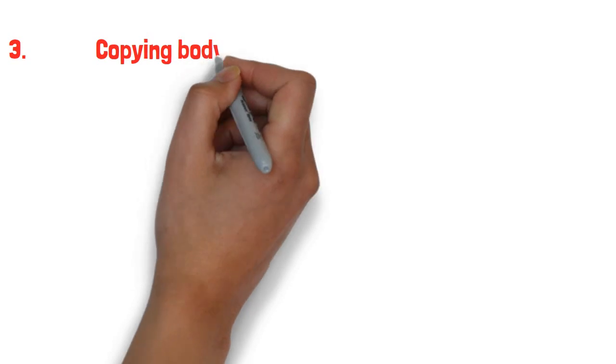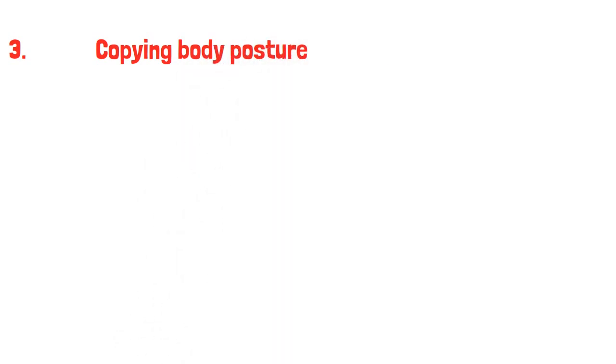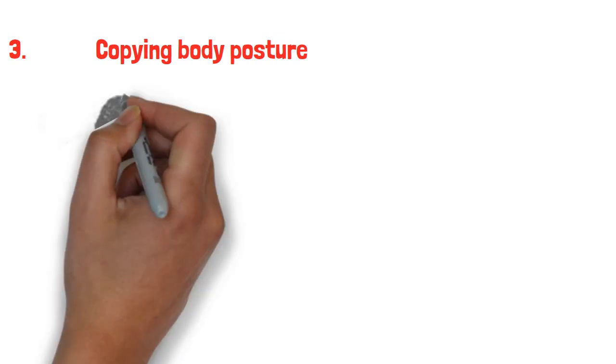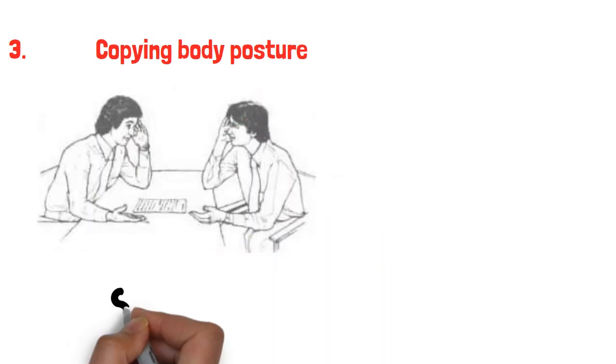3. Copying body posture. I touched on this in my previous videos on psychology tricks. You should check them out. When people copy our body posture, it's a signal that they're receptive to what we're saying.